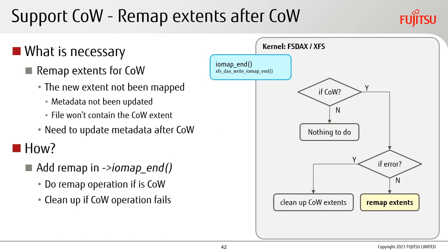Since FSDAX is synchronous, we need to remap the changed extents immediately. Otherwise, because the newly allocated extents are not remapped, the metadata hasn't been updated and the file will not contain the copy-on-write extents. IOMAP end is the perfect place to do this, and it is also where we can clean up those extents if something went wrong in the actor. Of course, if it is not a copy-on-write, nothing needs to be done there.